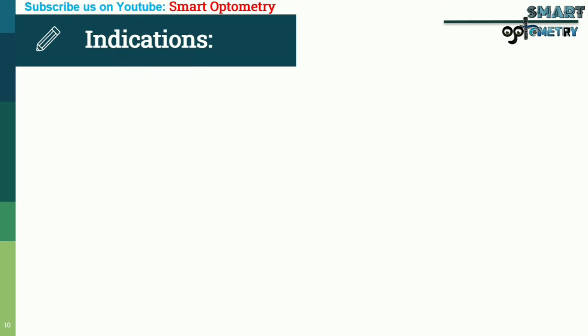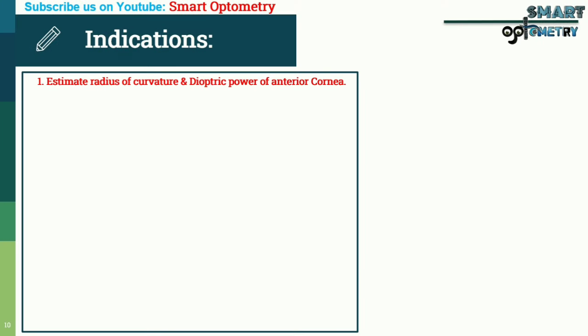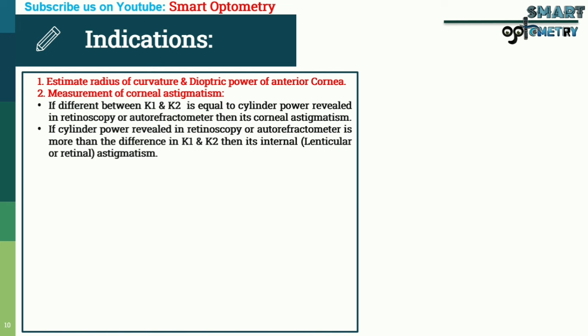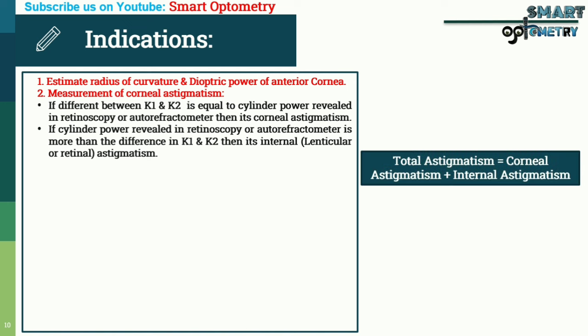Indications of keratometer: (1) Estimate radius of curvature and dioptric power of anterior cornea. (2) Measurement of corneal astigmatism — if the difference between K1 and K2 equals the cylinder power in retinoscopy or autorefractometer, it is corneal astigmatism; if the cylinder power is more than the difference between K1 and K2, it is internal (lenticular or retinal) astigmatism. Total astigmatism = corneal astigmatism + internal astigmatism.